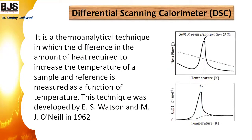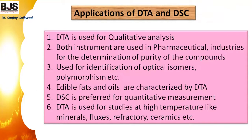The third technique is DSC — differential scanning calorimetry — a thermoanalytical technique in which the difference in the amount of heat required to increase the temperature of the sample versus a reference is measured as a function of temperature. This technique was developed by Watson in 1962. It measures the heat flow — heat evolved or absorbed — with respect to temperature, making it useful for studying processes like denaturation.